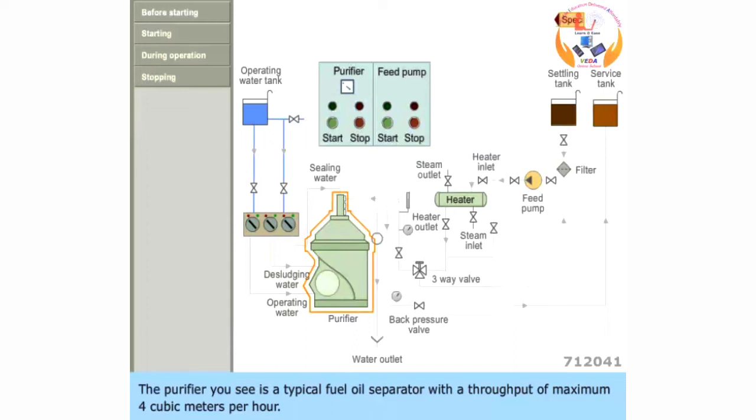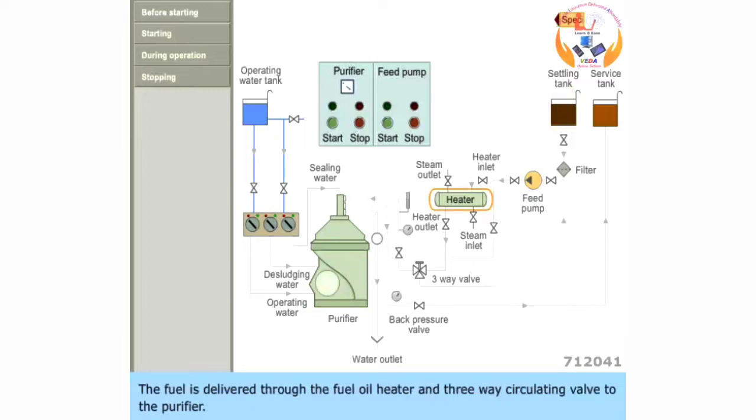The purifier you see is a typical fuel oil separator with a throughput of maximum 4 cubic meters per hour. The purifier feed pump takes suction from the fuel oil settling tank. The fuel is delivered to the fuel oil heater and three-way circulating valve to the purifier. The purified oil flows from the purifier outlet to the fuel oil service tank.